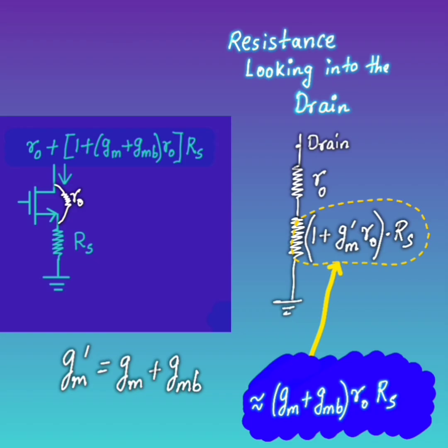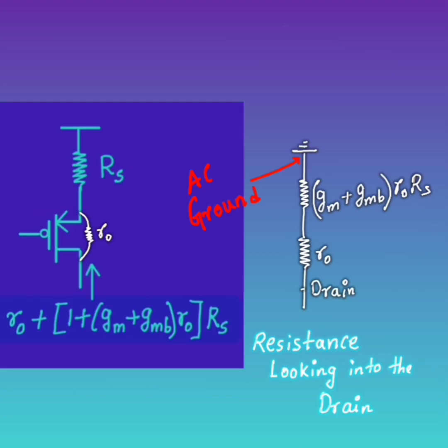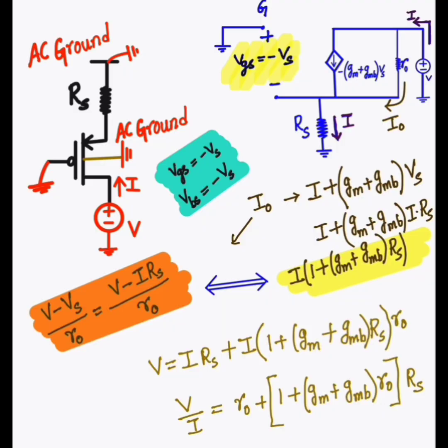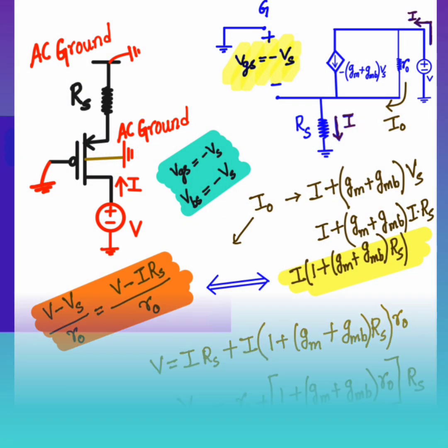Always remember: the impedance at the drain end is very high. Looking from the drain end you see r0, and Rs is multiplied by (1 + gm'·r0), where gm' = gm + gmb. So the drain impedance is: r0 + (1 + gm + gmb)·r0·Rs. For PMOS, you also get the same form: r0 + (1 + gmb + gm)·r0·Rs.